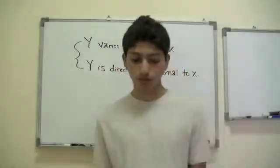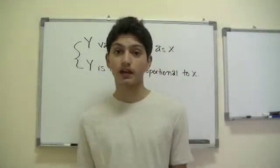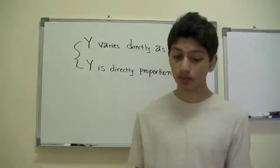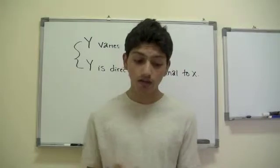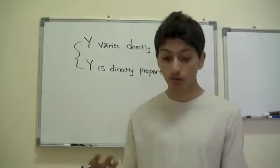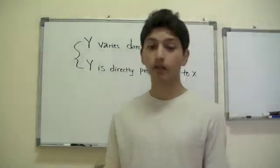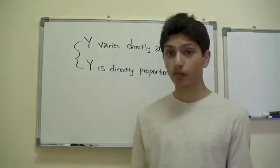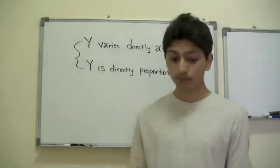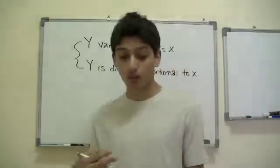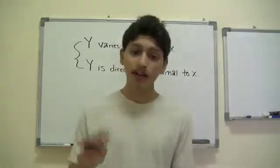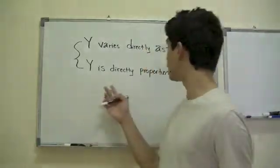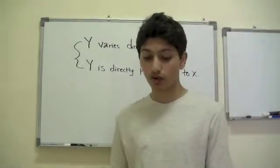One of the most important things we do in mathematics is to build an equation to solve world problems. Sometimes those equations are delivered to us as a formula in the word problem, because the problem itself by its nature lends itself to that formula. Other times we have to build our own equation. But right now we are going to talk about direct variation problems.